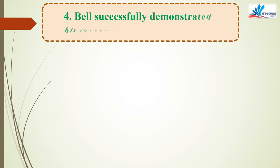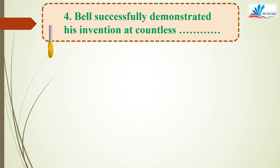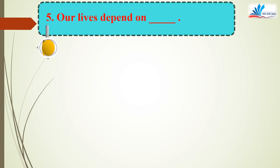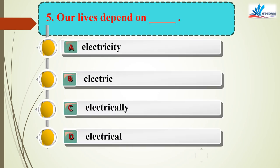Now we turn to question 4. Bell successfully demonstrated his invention at countless exhibitions. A, exhibition, is right. Bell đã trình bày thành công phát minh của mình ở vô số cuộc triển lãm. The last one is question 5: Our life depends on — the correct answer is A, electricity.